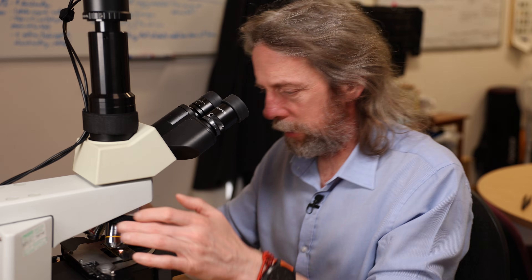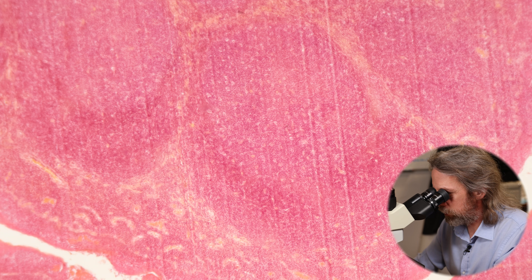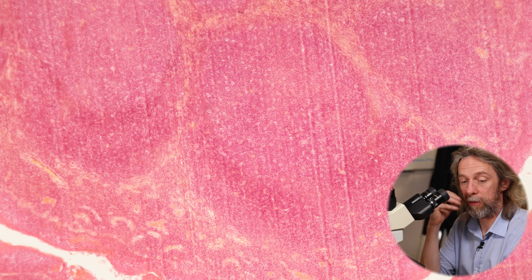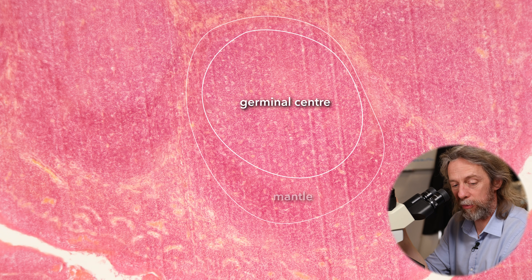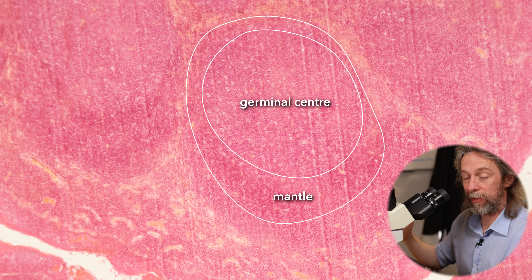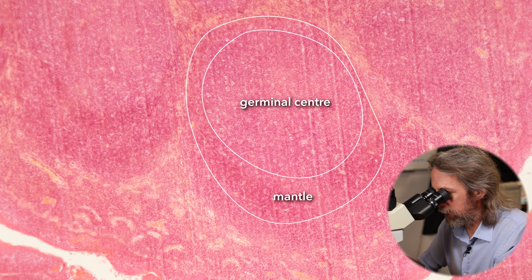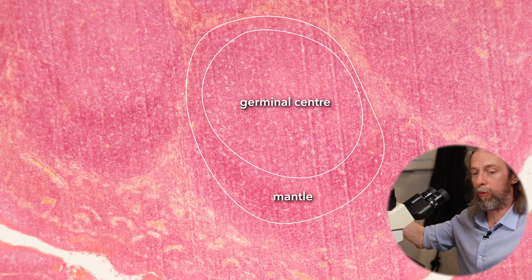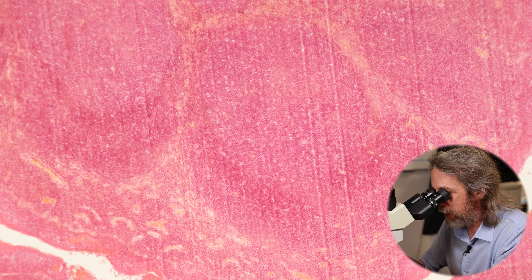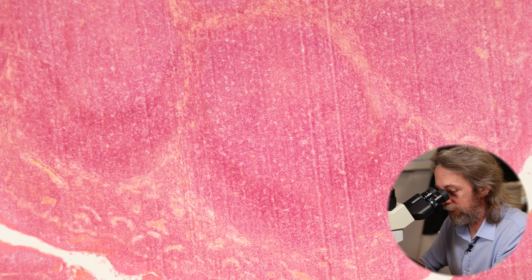Let's have a look at a nodule. There is a lymphoid nodule filled with largely B lymphocytes. It's paler in the center where we have a germinal center, where some of those lymphocytes are differentiating and becoming other cells like plasma cells that will move off to other places. We'll also see macrophages in there. Basically we've got lots and lots of nodules all packed together.